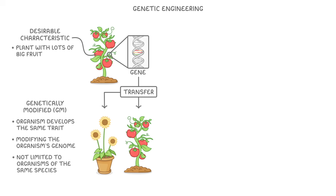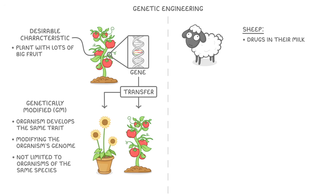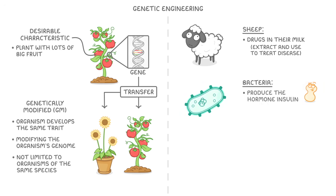We've now genetically engineered all sorts of genes into all sorts of organisms. For example, some sheep have been genetically engineered so that they can produce substances like drugs in their milk, which we can then extract and use to treat diseases. In a similar way, we've genetically engineered bacteria to produce the human hormone insulin, so that we can harvest it and use it to treat diabetes.